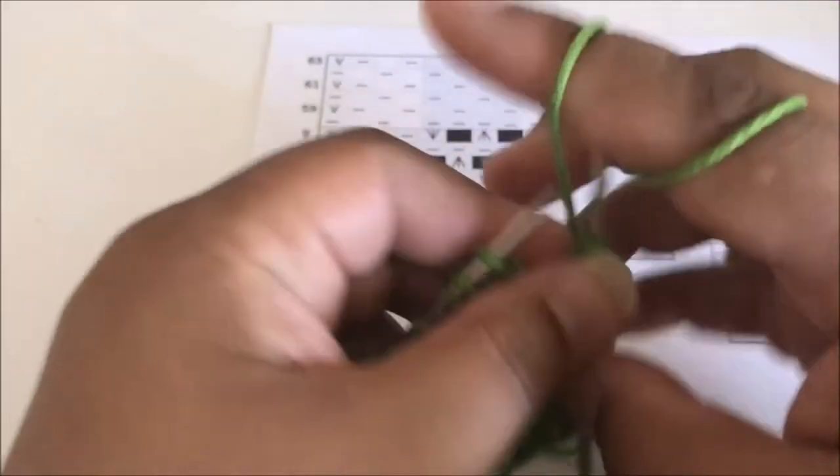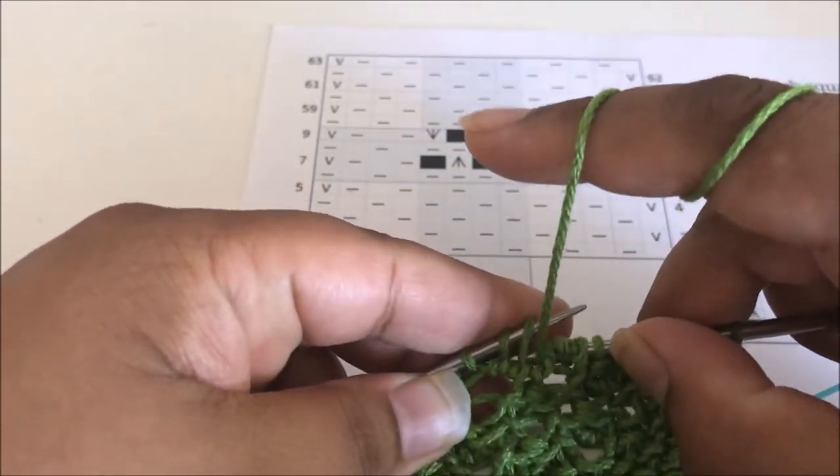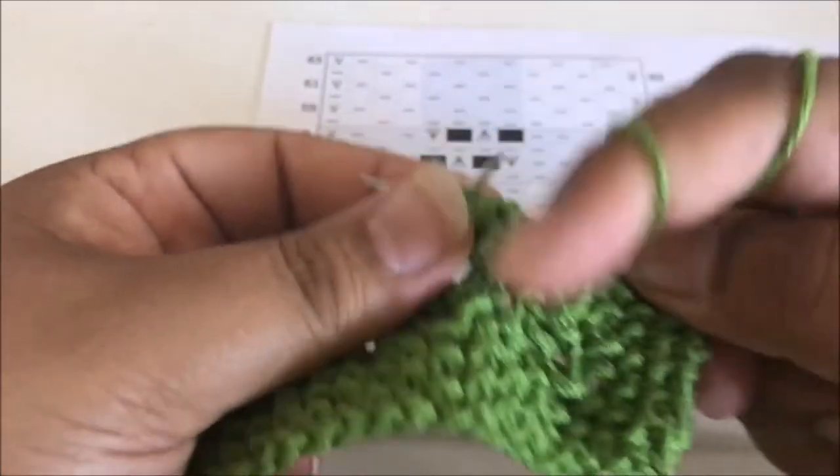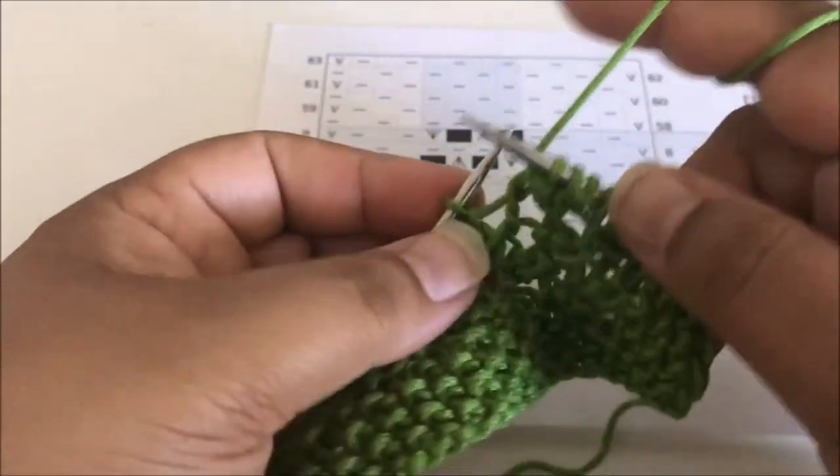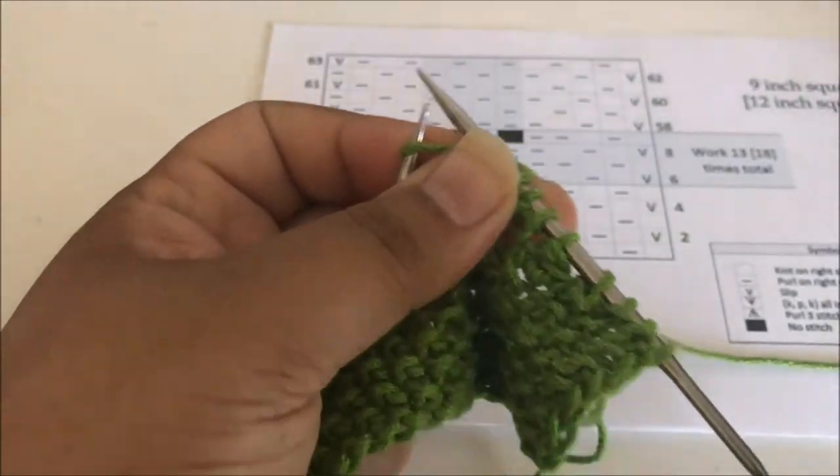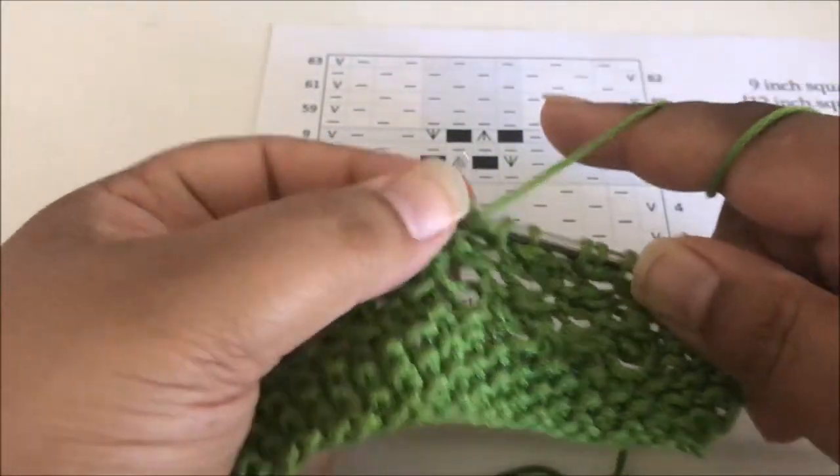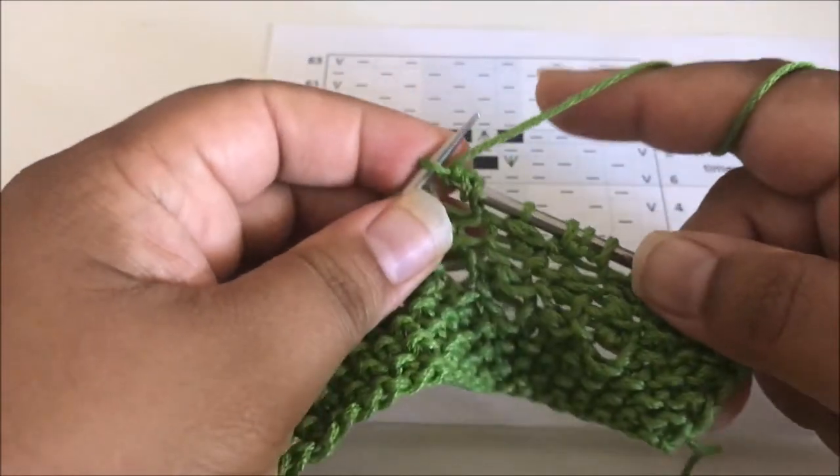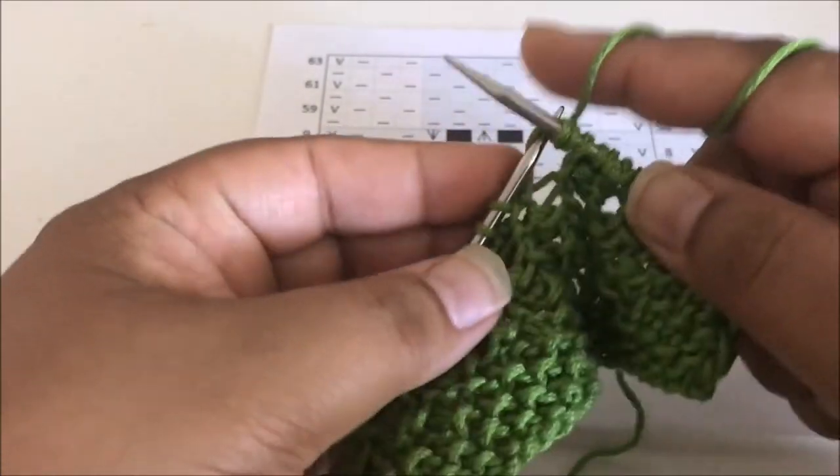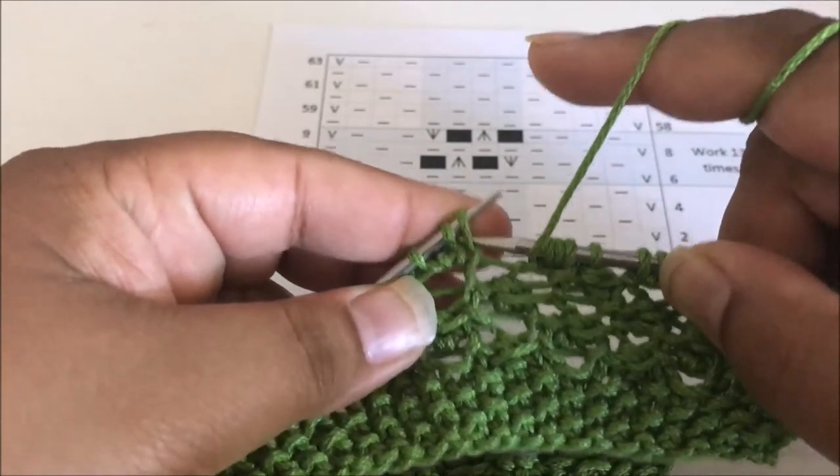So I'm going to continue that across the row, purl three together, and then knit, purl, and knit all into the same stitch. And I take that off the needle. And now again, purl three together.